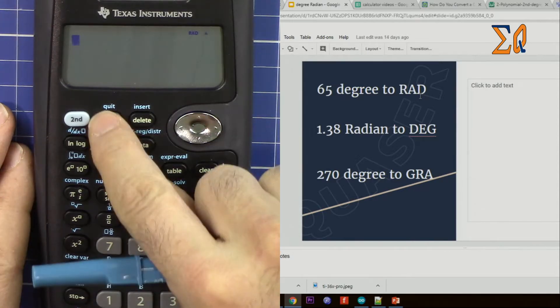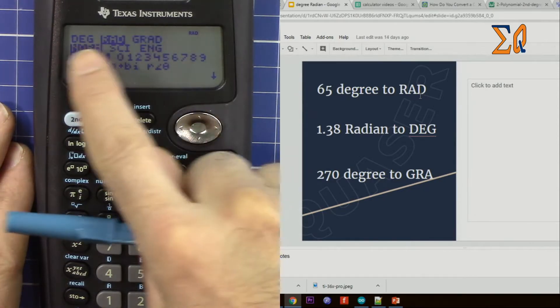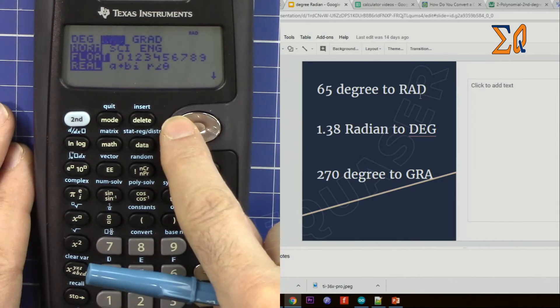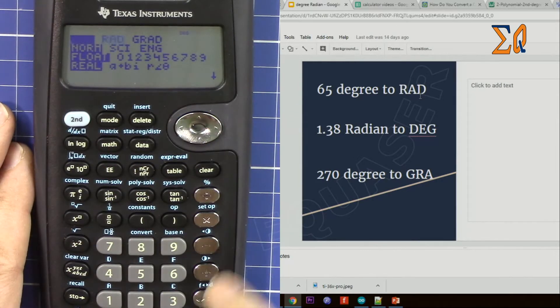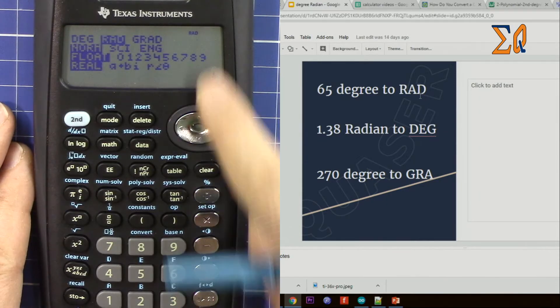...just press mode, go to gradient, or on the first row just go left and right. I'm pressing degree so it changed to degree. I'm going back to radian because I want it in radian. Press that and then clear.